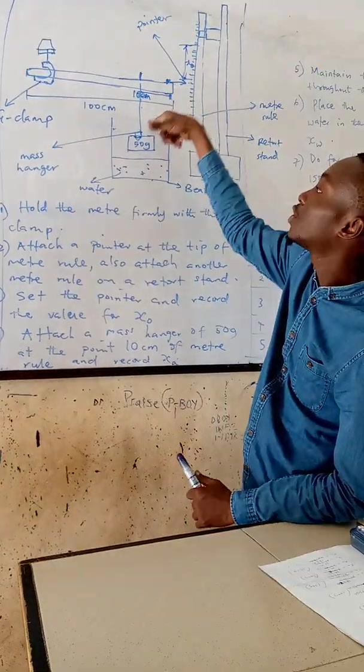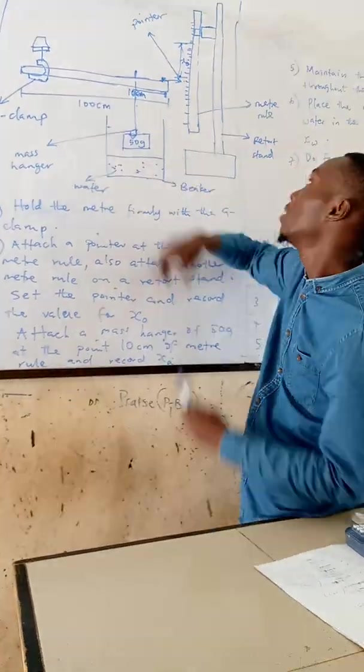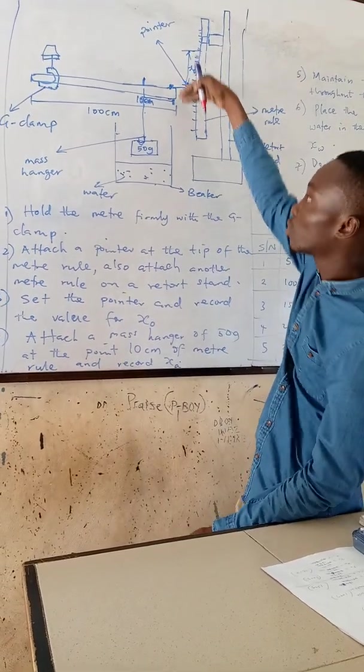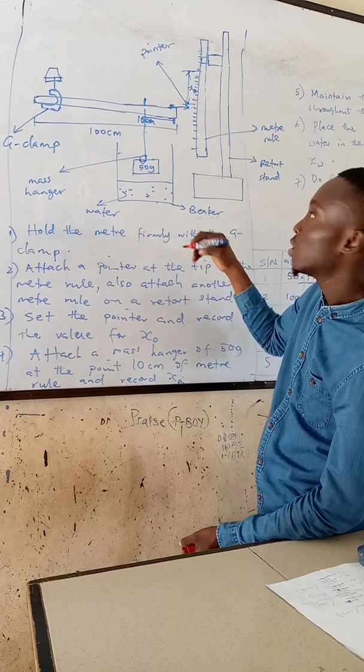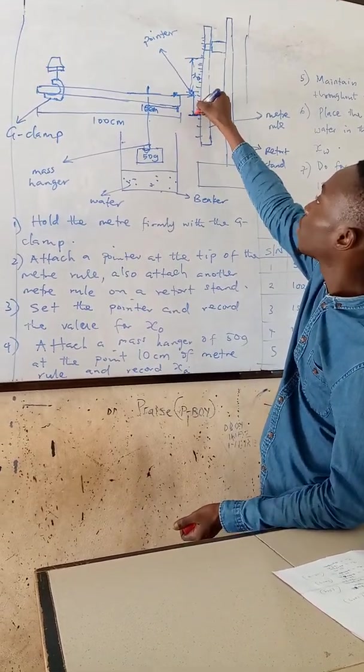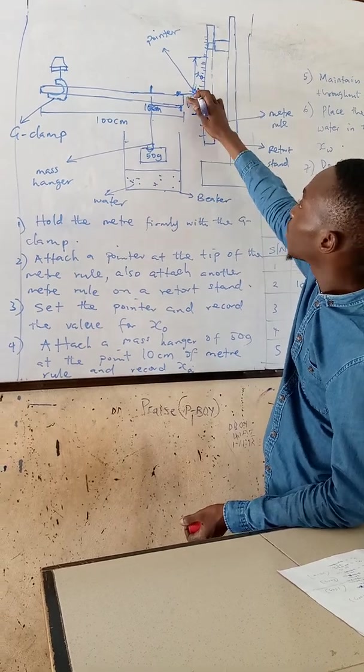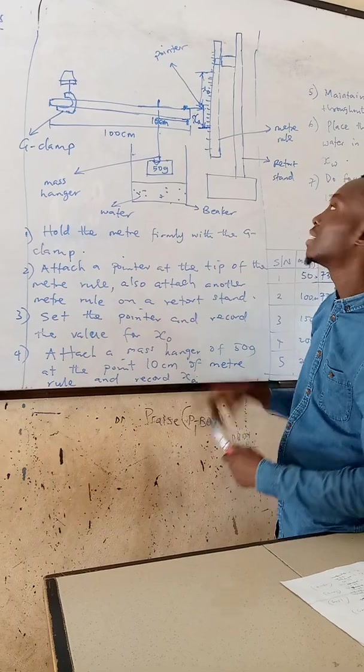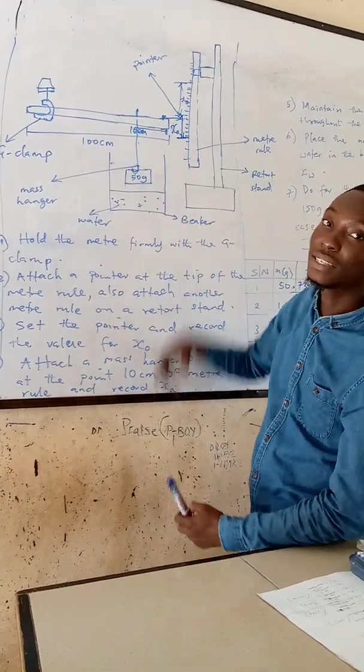So when we now attach a mass of 50 grams, we are going to see that the meter rule is going to come down a little. So we are going to record the point at which the meter rule comes down and we are going to call it X, meaning the distance when the mass is in air.